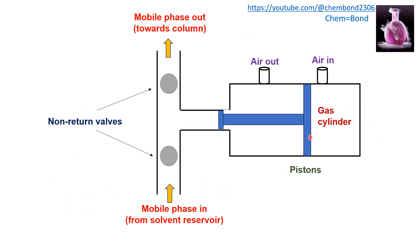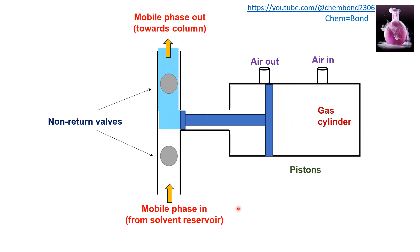For the working of the pneumatic pump: a gas cylinder is used with two valves — one for air in and one for air out. Two pistons are used — one large and one small. The mobile phase enters from the solvent reservoir through one part of the tube, and the other part connects to the column. There are two strokes: forward and reverse. In the reverse stroke, mobile phase enters from the solvent reservoir; in the forward stroke, the gas pressure moves the piston to push the mobile phase towards the column.